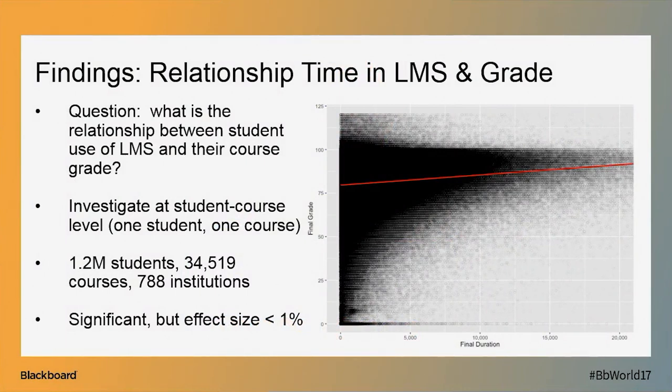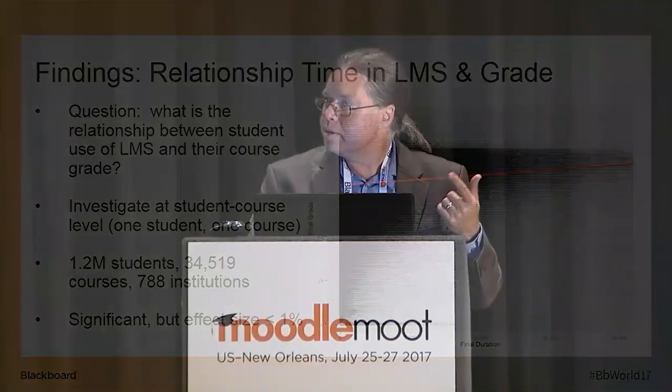With the data we had at very large scale — 1.2 million students, 35,000 courses, 788 institutions — this is a scatterplot of the results. You can see there is a line; it looks like there's a significant effect. But if you look at the scale, it's a very large duration. There was a significant relationship, but it was less than 1% effect — something like students spending an extra hour in a class would lead to a 0.05% improvement in their final grade.